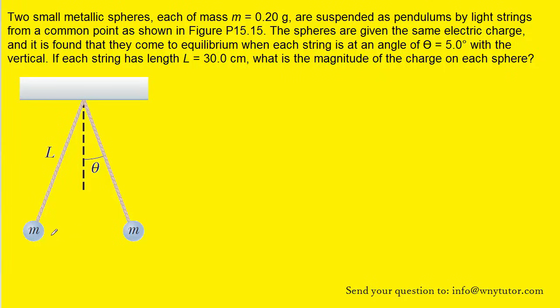To proceed in solving this question, what we can do is draw a free body diagram for one of the two masses. Why don't we arbitrarily pick this one?